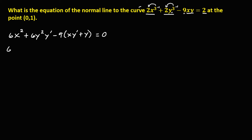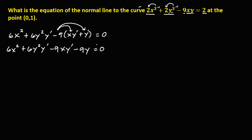Then simplify: we have 6x squared, plus 6y squared times y prime, then distribute — that's negative 9x times y prime, distribute — that's negative 9y, then equals 0.